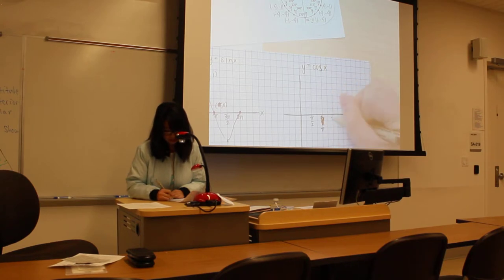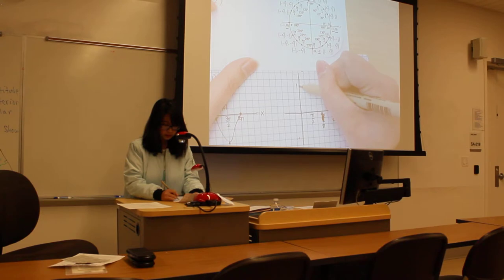Pi over 2, pi, 3 pi over 2, and then 2 pi. And then again, 1 and negative 1, since the range is just from 1 to negative 1. So for cosine, at 0, cosine is 1, so you start here.